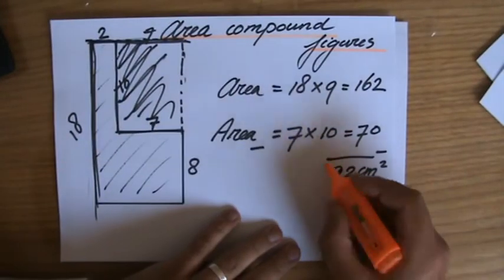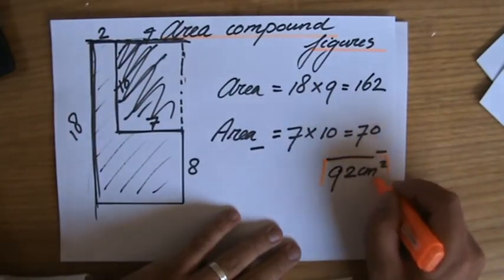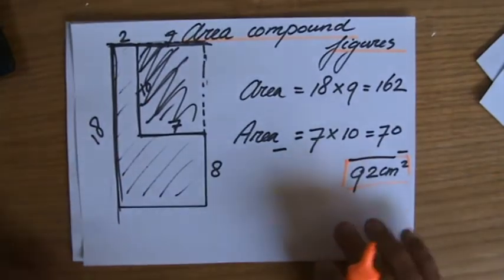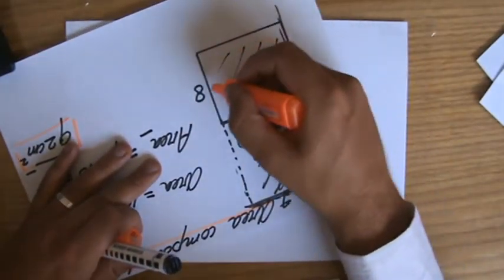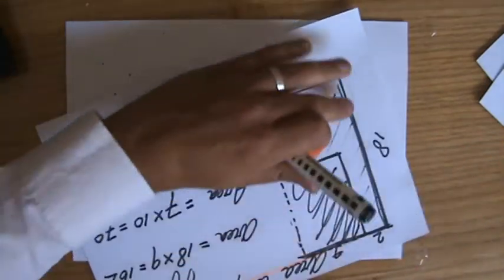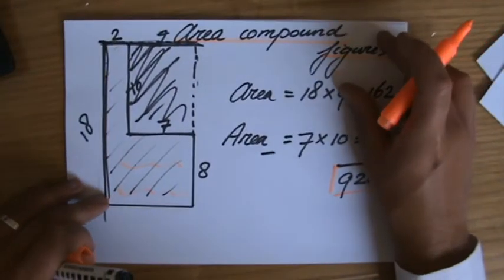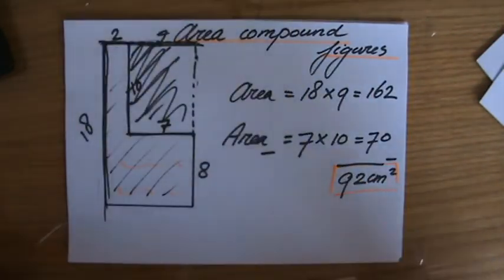92 centimeters squared at the area of this compound figure, the L, the boot, or perhaps you can see a little flag there in it. All right, I hope that was useful. Let's have a look at the next question which also involves the area of compound figures.